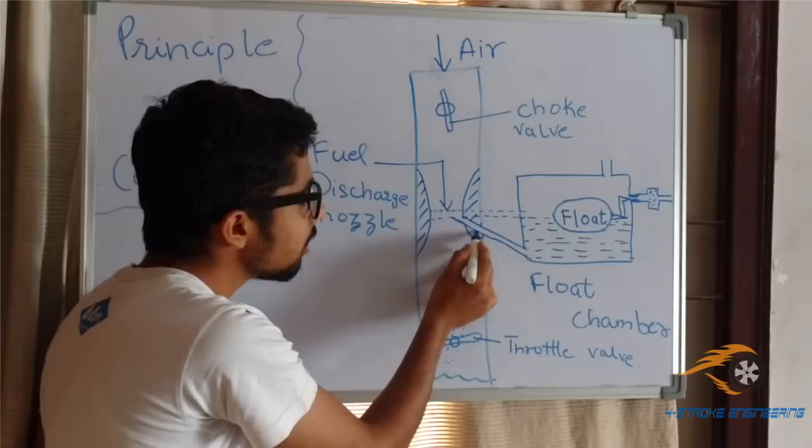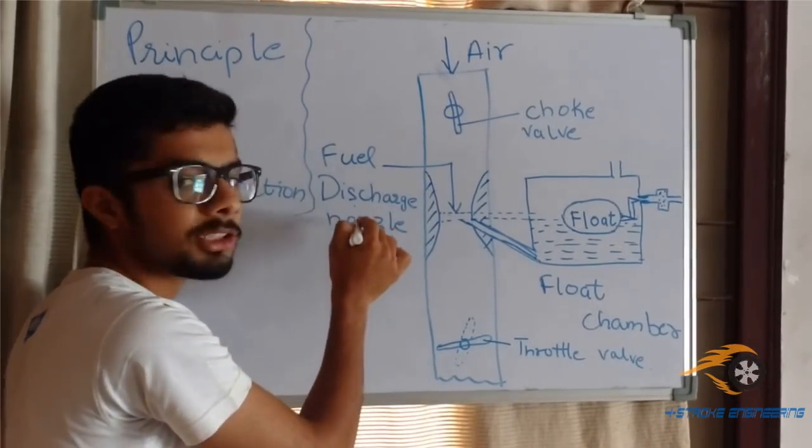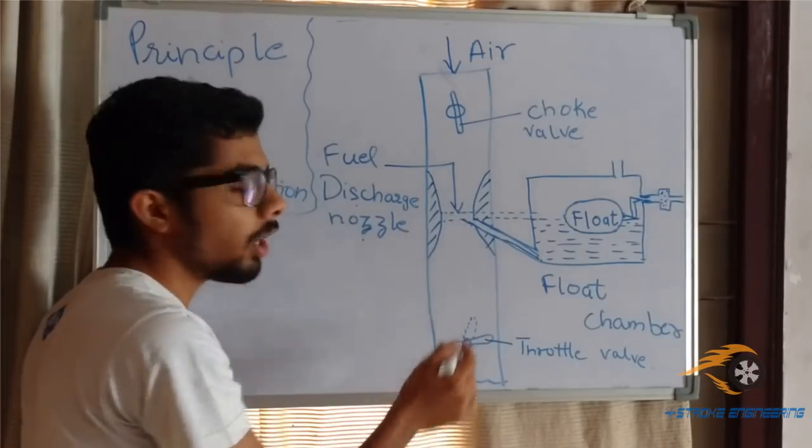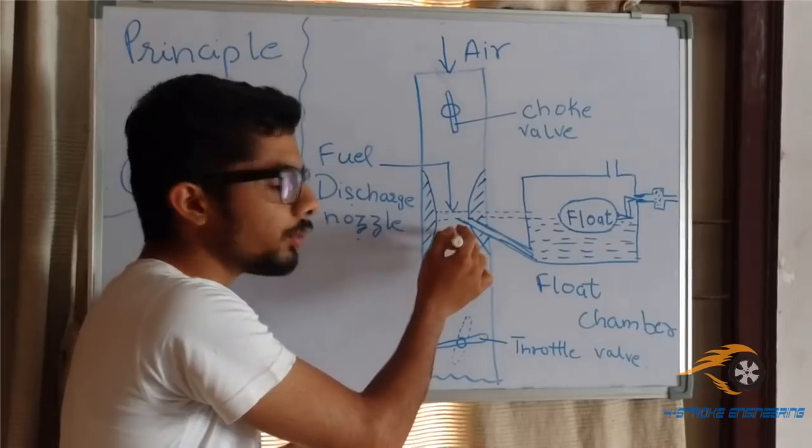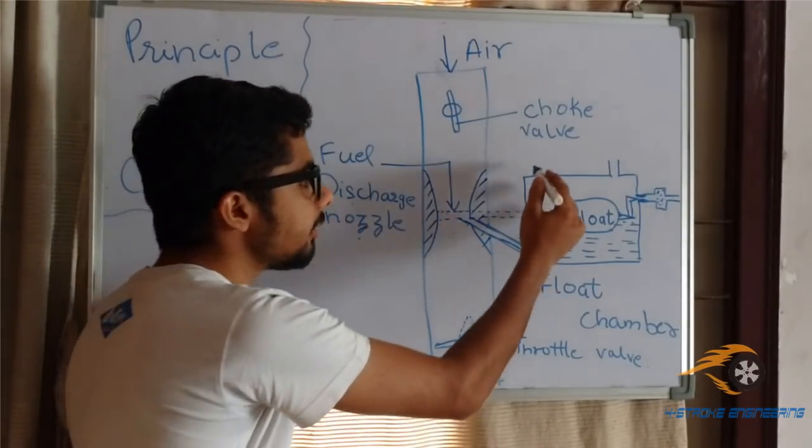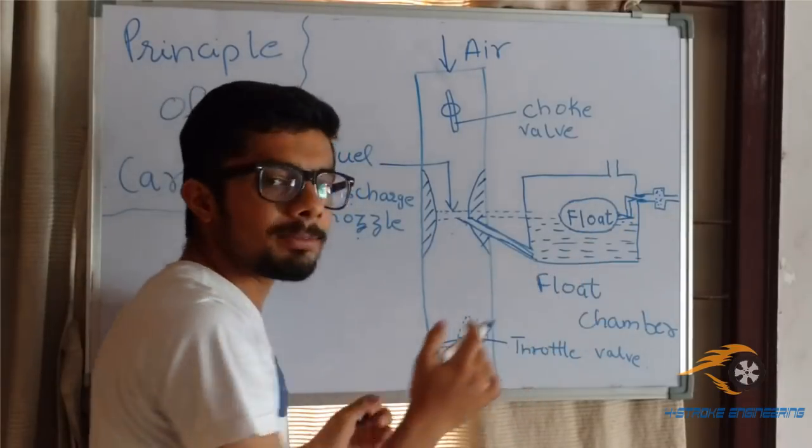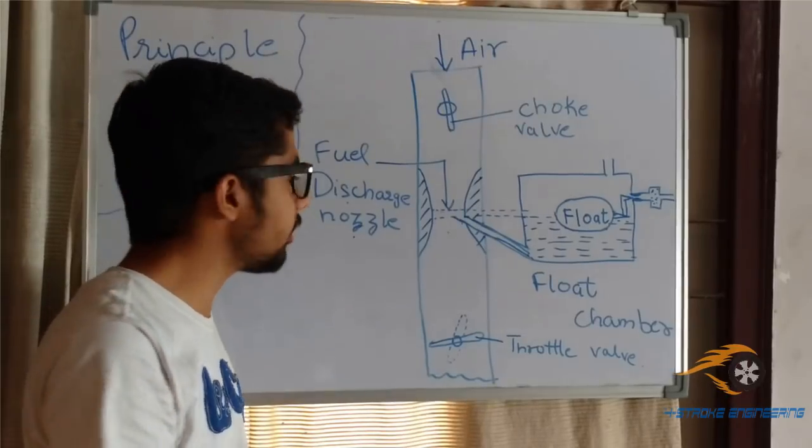This is why this tube, known as fuel discharge nozzle, is provided over here. Now what exactly is fuel discharge nozzle? In a carburetor, this venturi needs to suck the fuel from a float chamber. This is a float chamber. I will explain the float chamber in the next topic, which is working of simple carburetor.